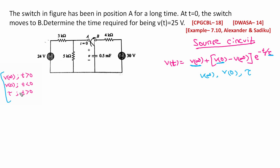We have a problem here: first we have V0 to calculate. V0 is calculated for T less than 0. At T equal to 0, the switch moves from position A to position B. So for T less than 0, the switch is closed at position A.